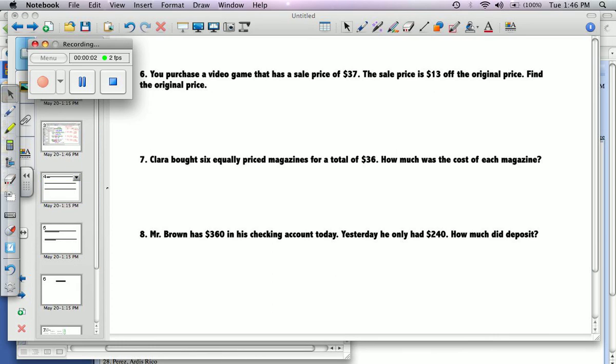Okay, on number six, we have: You purchase a video game that has a sale price of $37. So the sale price is $13 off of the original price. Find the original price.